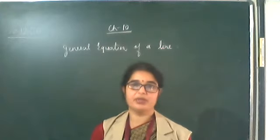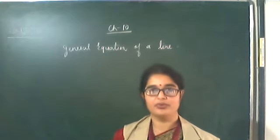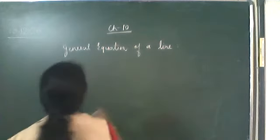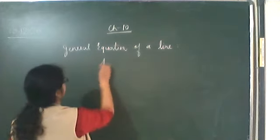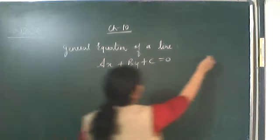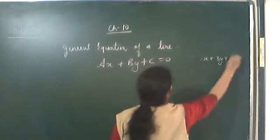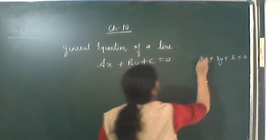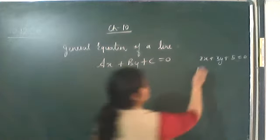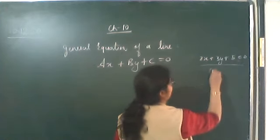Good morning class. We will continue with chapter number 10. In chapter 10, we have completed up to section 10.2. So the next topic is the general equation of a line. We were getting equations of this type, and we simplified the equation in section 10.4.